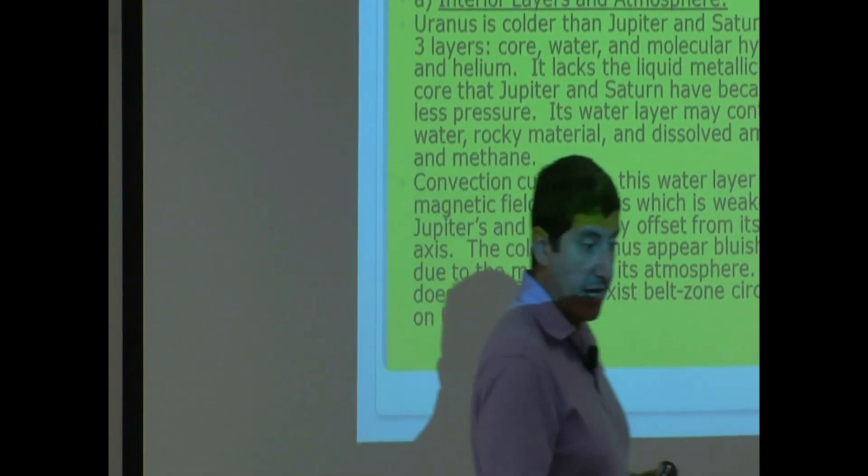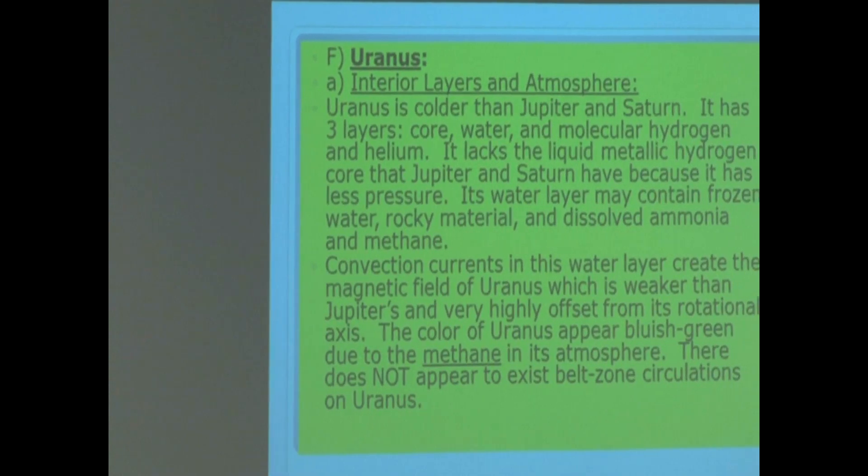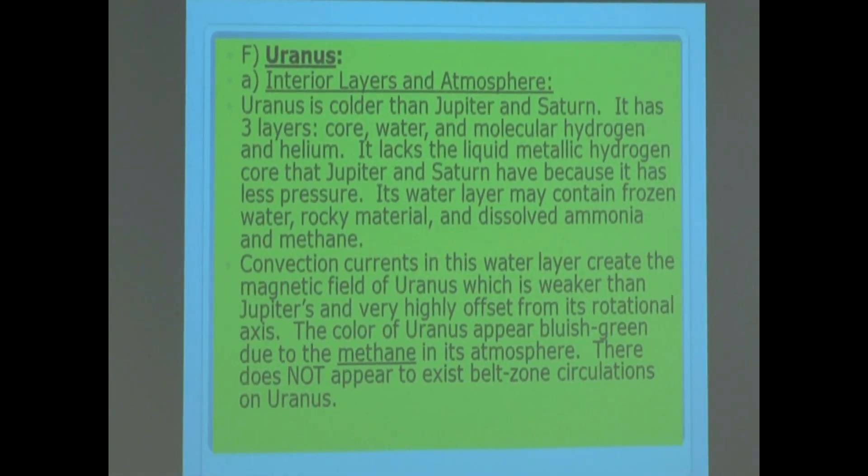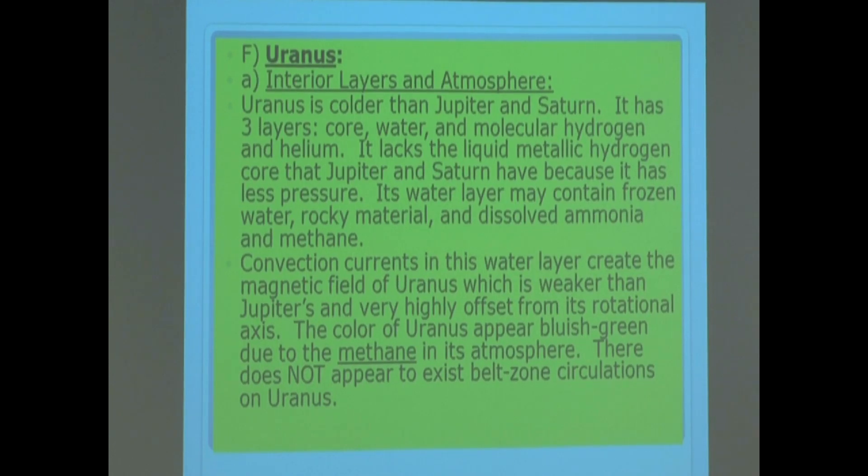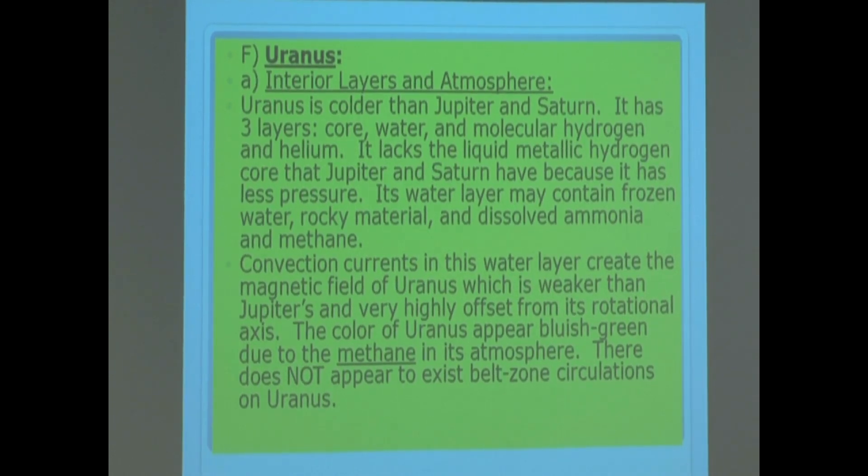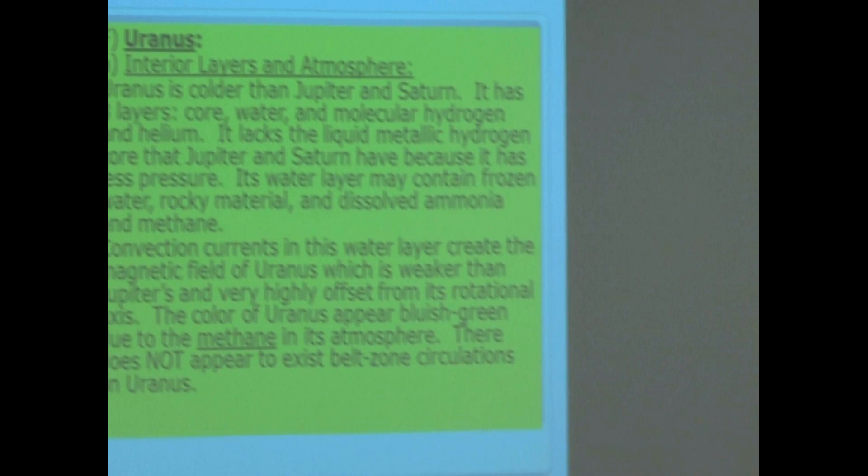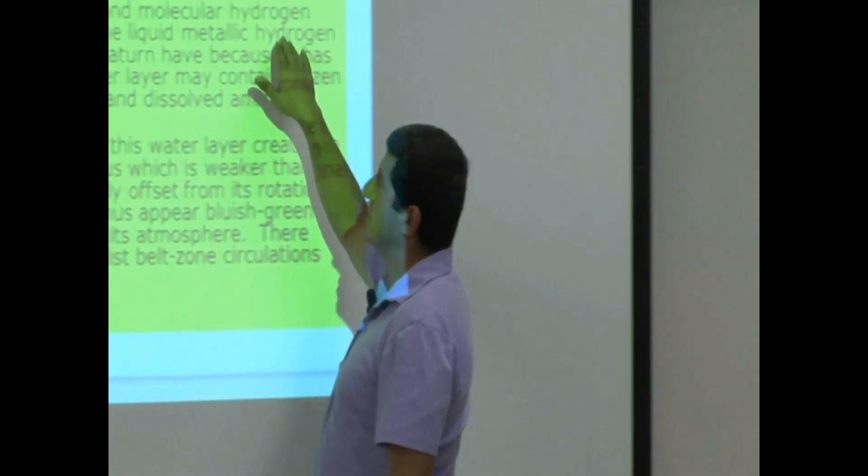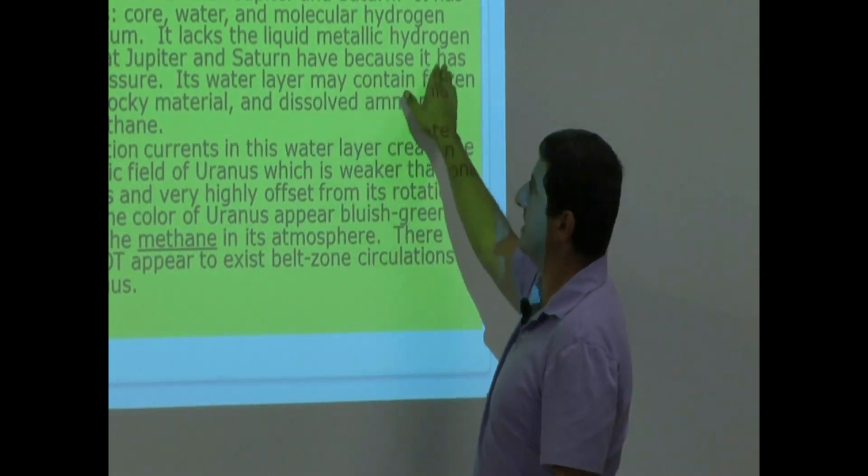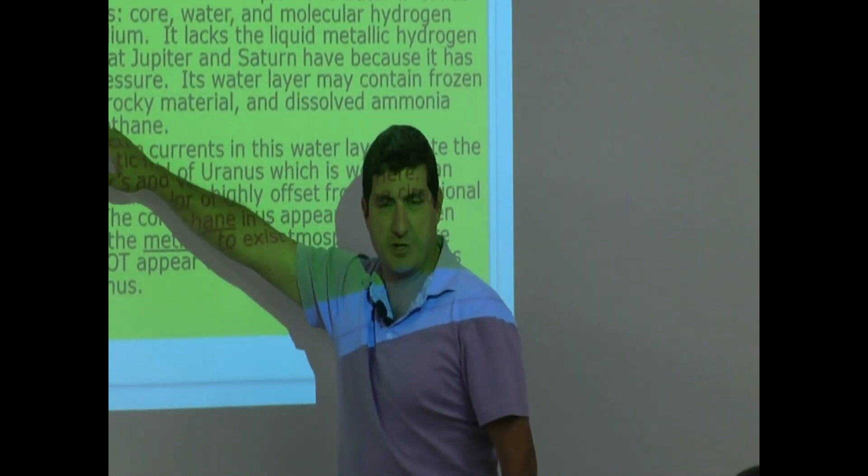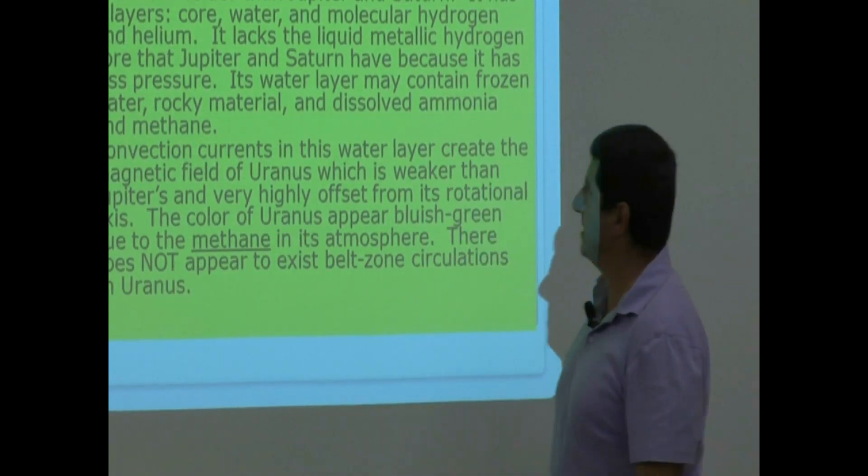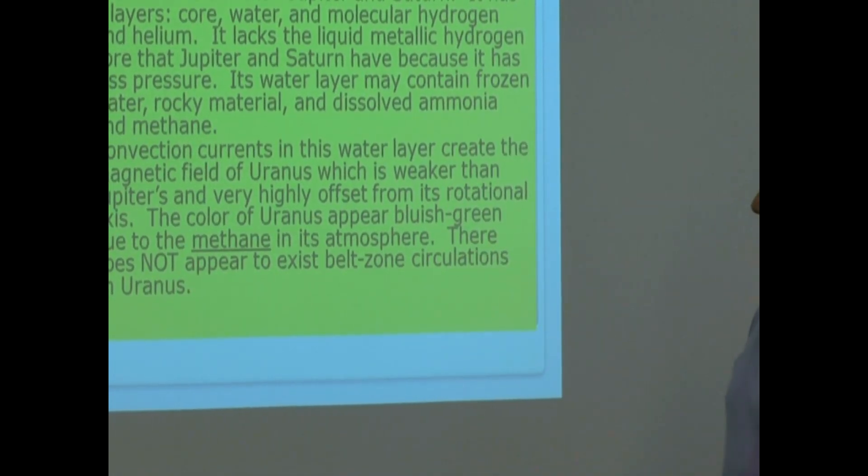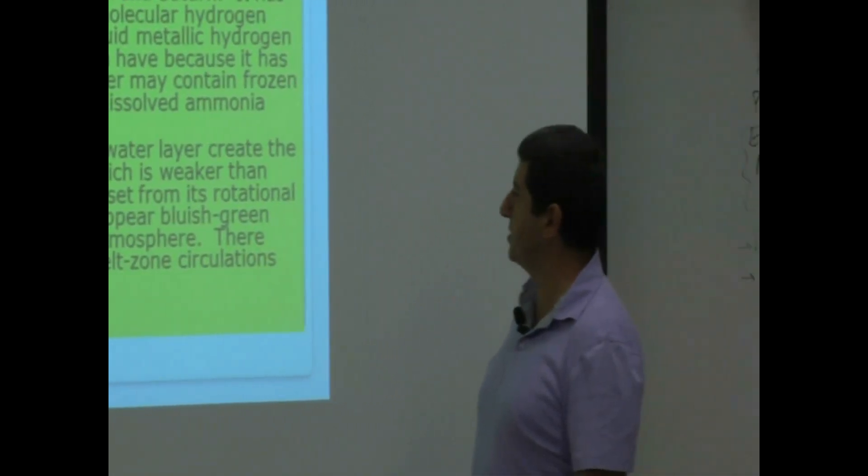Uranus interior and interior layers and atmosphere. Uranus is colder than Jupiter and Saturn. It has three layers: core, water, and molecular hydrogen and helium. Notice that it lacks the liquid metallic hydrogen that Jupiter and Saturn have because it has less pressure. Its water layer may contain frozen water, rocky material, and dissolved ammonia and methane.